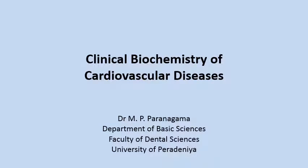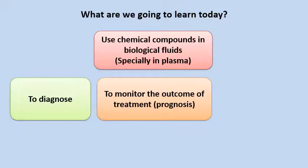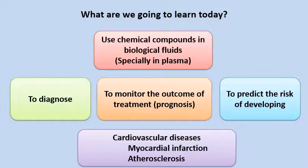Good morning. Today we are going to discuss clinical biochemistry of cardiovascular diseases. You would have already learned about the structure, functions, and many diseases associated with the cardiovascular system. Today we are going to discuss how chemical compounds in our biological fluids — especially in our plasma — can be used in diagnosis, to monitor treatment outcomes, and to predict the risk of developing cardiovascular diseases, especially myocardial infarction and atherosclerosis.